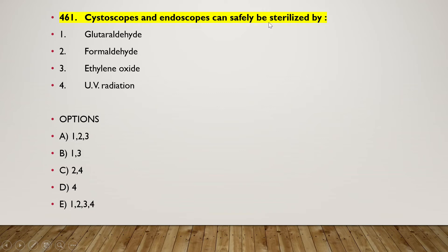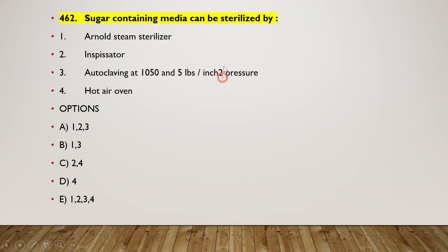The next question: cystoscopes and endoscopes can safely be sterilized by glutaraldehyde, formaldehyde, ethylene oxide, or UV radiation. The right answer is option B — one and three — glutaraldehyde and ethylene oxide are used to sterilize cystoscopes and endoscopes.